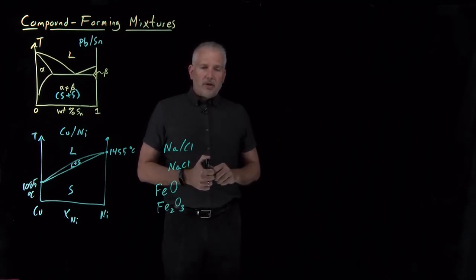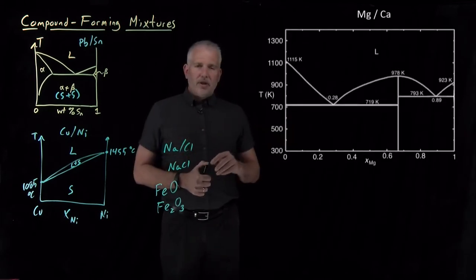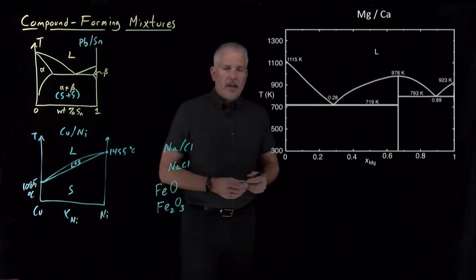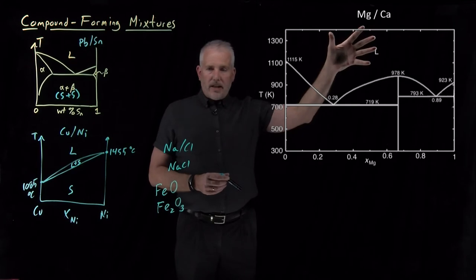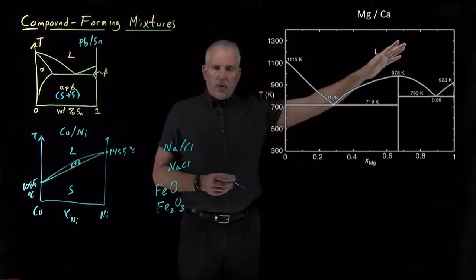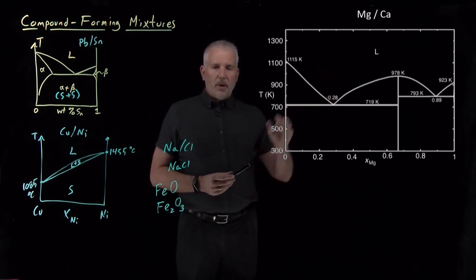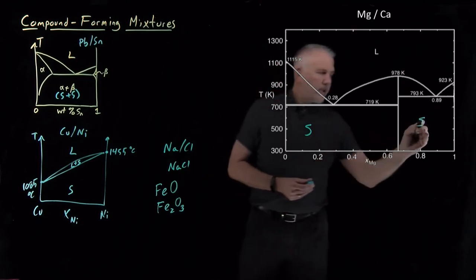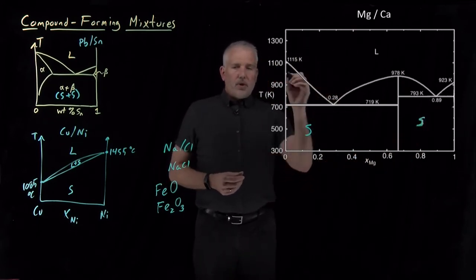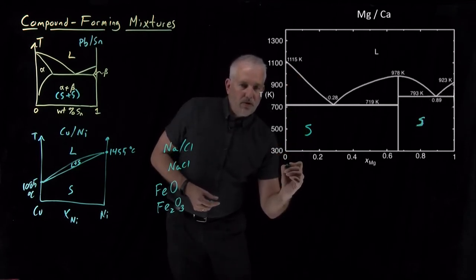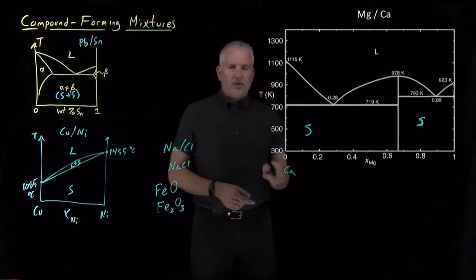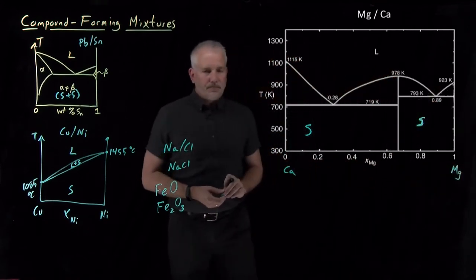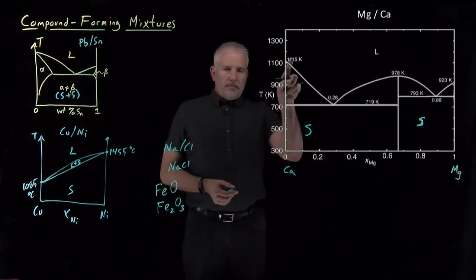I'll put up some experimental data for what the phase diagram looks like for a compound that forms a stoichiometric complex. This is the phase diagram for magnesium and calcium — these also form a stoichiometric compound. At high enough temperatures, above about 1100°C, I can form a liquid in which the two elements are miscible. This line at 0% mole fraction magnesium represents pure calcium, which melts at 1115 K. Pure magnesium melts at a somewhat lower temperature of 923 K.